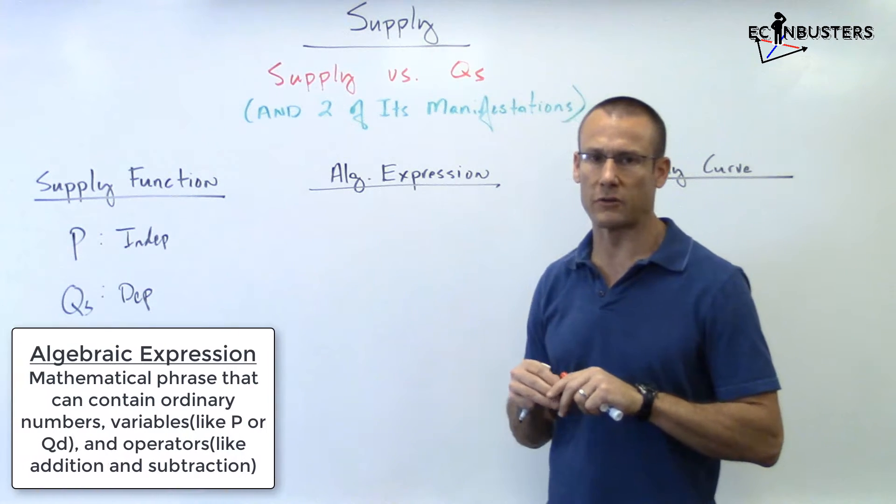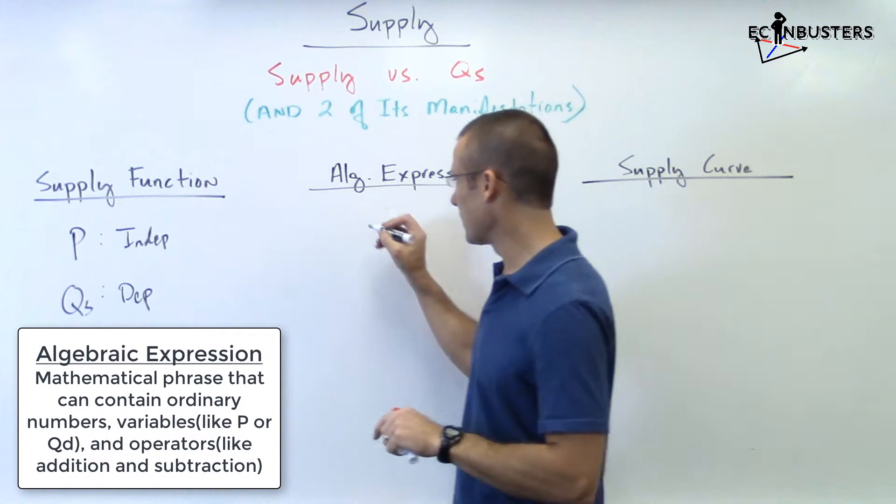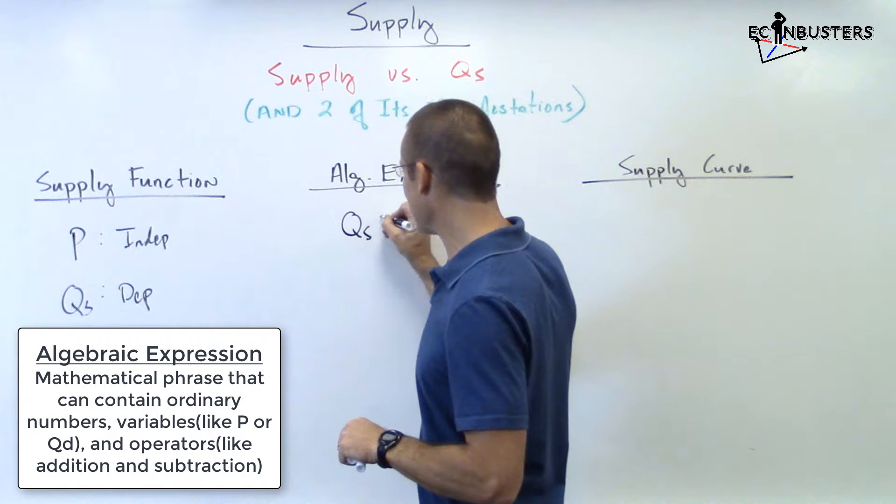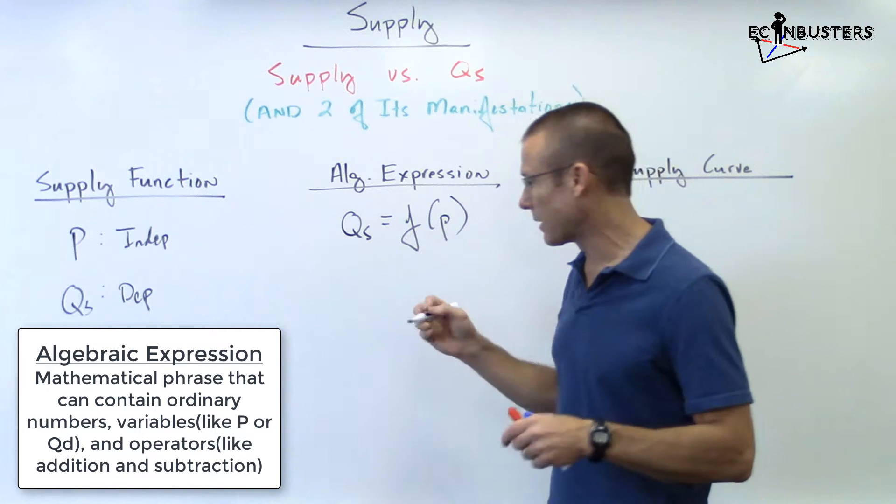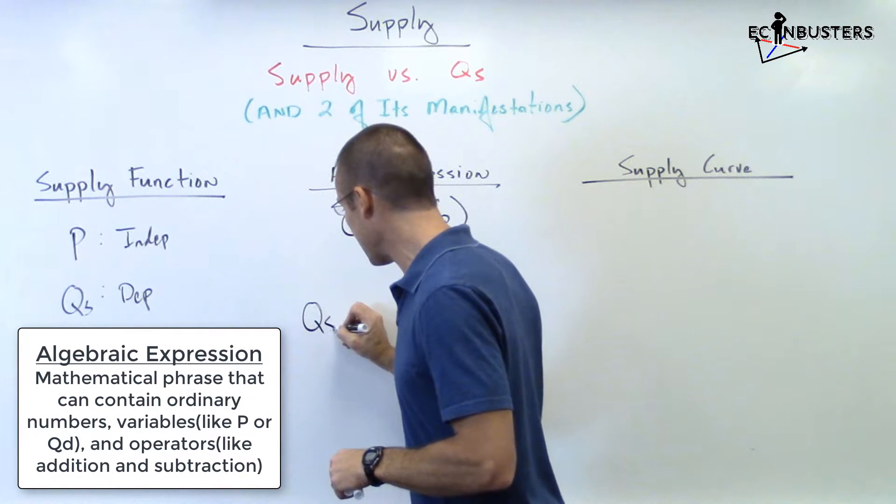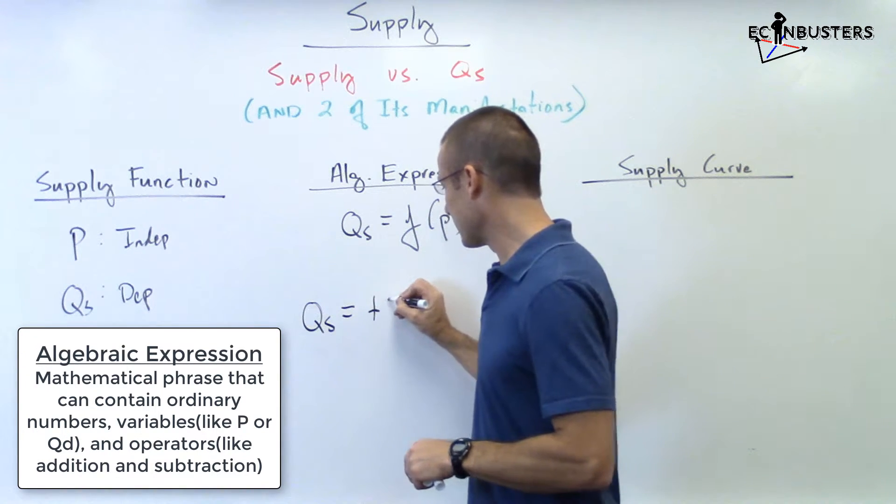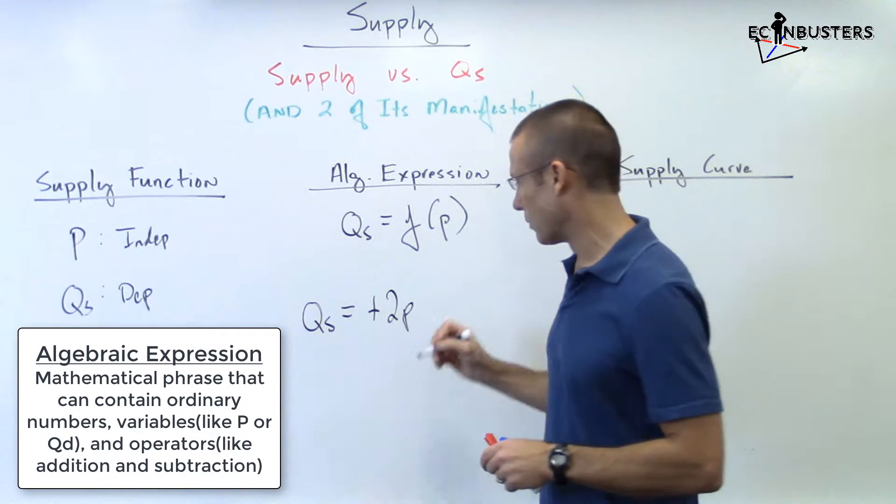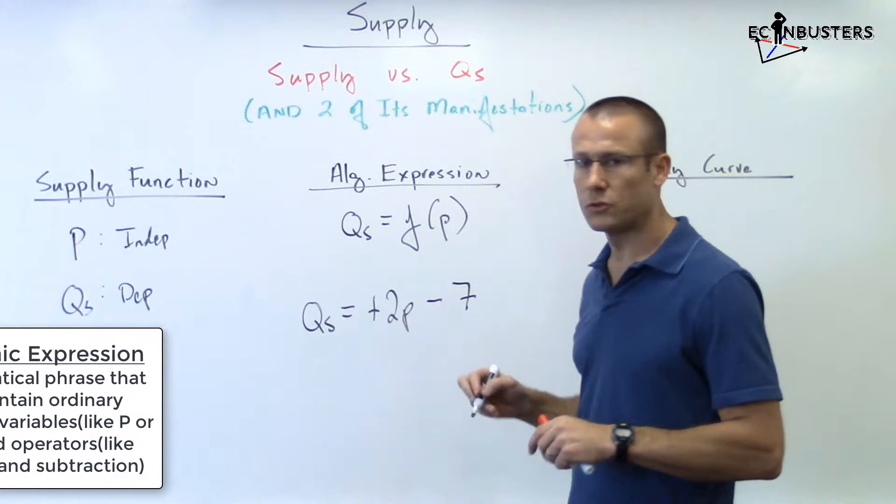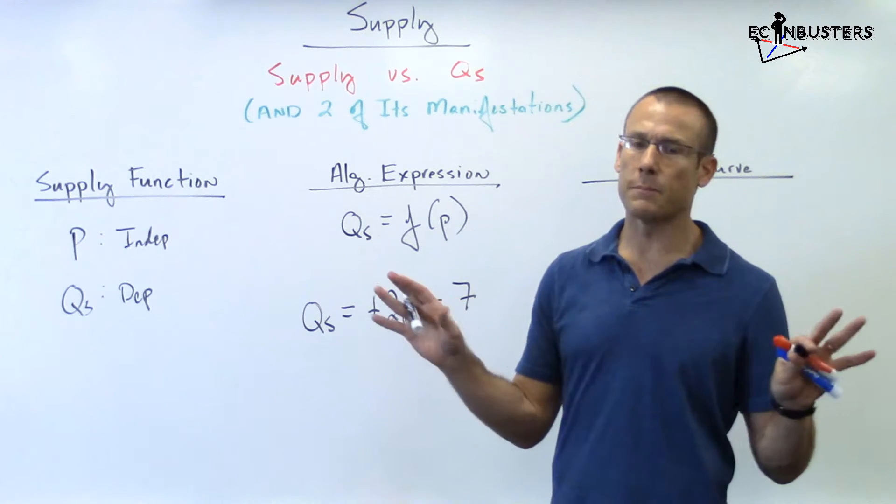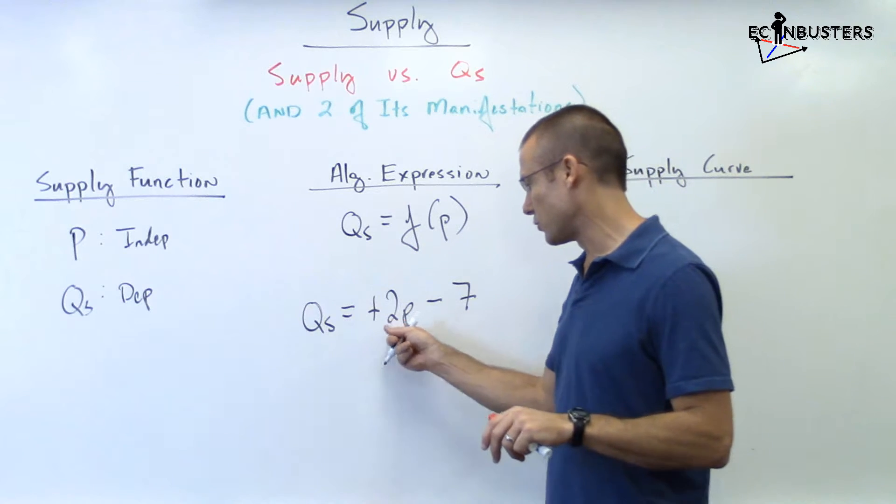Let's go to an algebraic expression. I'm going to just make up one. We know that quantity supplied is a function of price. Let's make up one: quantity supplied equals +2P minus 7. It's going to be a very simple one. Now there's some things I just made up out of thin air - I could have put anything in the 2 and the 7. Those constants, those values, I pulled them out of thin air. Any numbers will work. However, that positive